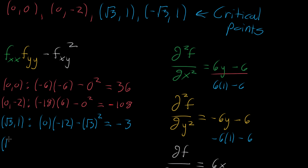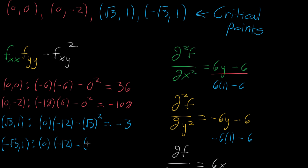For the point (-√3, 1): this will be very similar because f_xx only has a y term, and we're plugging in the same y, so it's also going to be zero for the same reasons. f_yy is also going to be negative 12 since the value of y didn't change — though it doesn't really matter because we're multiplying by zero. For the mixed partial, now we're plugging in negative √3, but that has the same square, so again we're just subtracting off three, giving negative three.